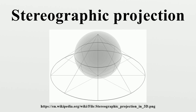This line intersects the plane z = 0 in exactly one point P. Define the stereographic projection of P to be this point P in the plane. In Cartesian coordinates on the sphere and on the plane, the projection and its inverse are given by formulas. In spherical coordinates on the sphere and polar coordinates on the plane, the projection and its inverse are given, where Φ is understood to have value π when R = 0. There are many ways to rewrite these formulas using trigonometric identities.